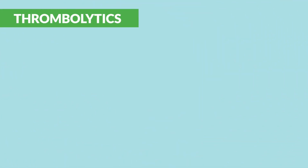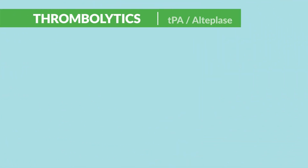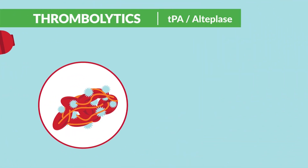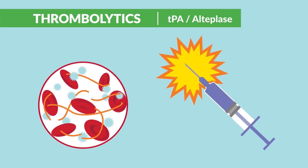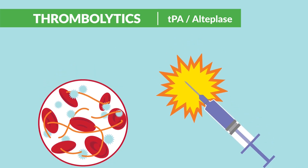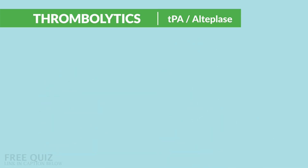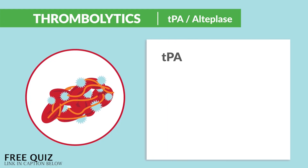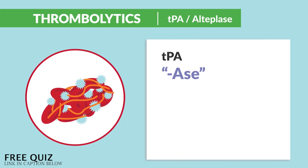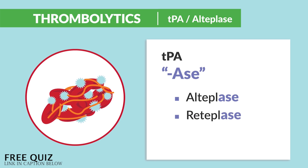Now for thrombolytics — our clot busters, our atomic bomb — the most powerful one-time push-only drugs. Key term: clot busters. The names include TPA and those ending in -ase, like alteplase, reteplase, or even streptokinase.